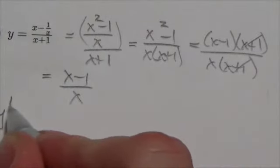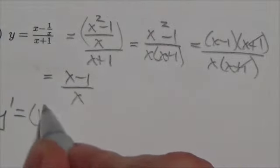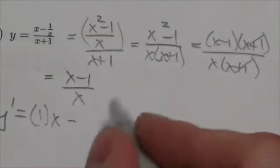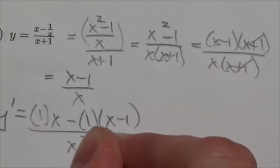But in this case here, let's use the quotient rule. The quotient rule says the derivative of the numerator, which is 1, times the denominator minus the derivative of the denominator, which is 1, times the numerator all over the denominator squared.